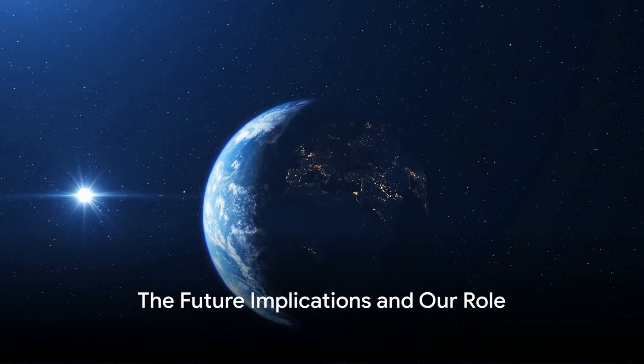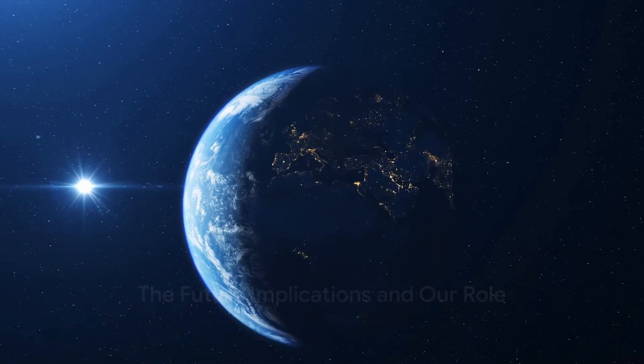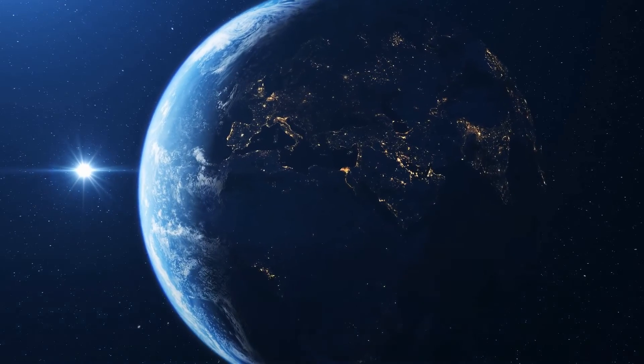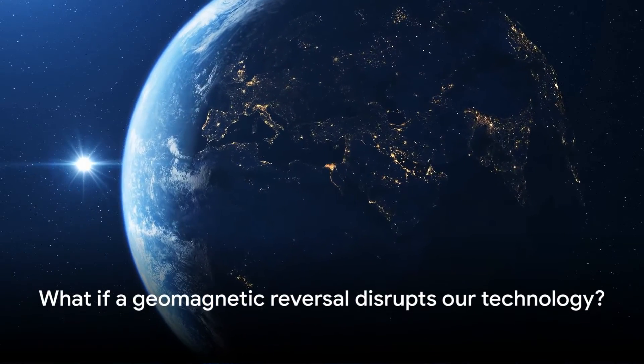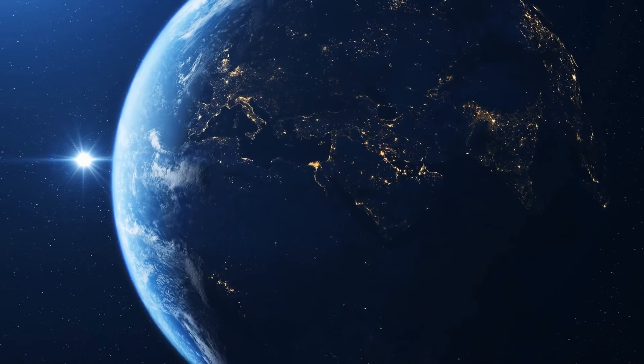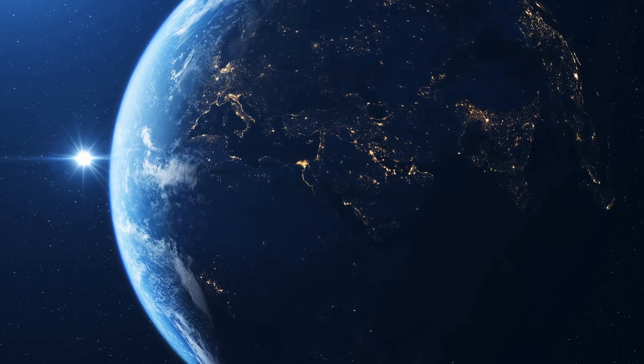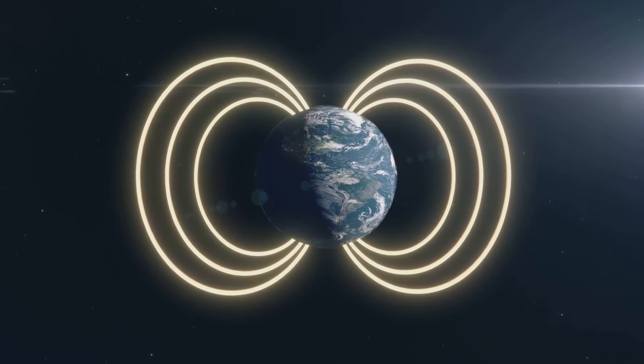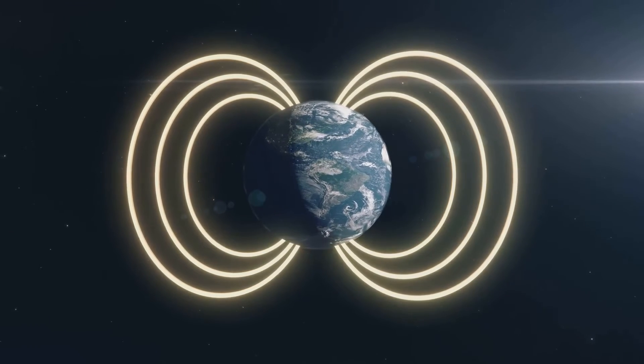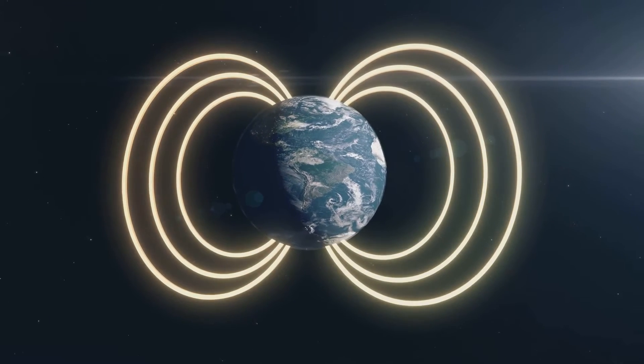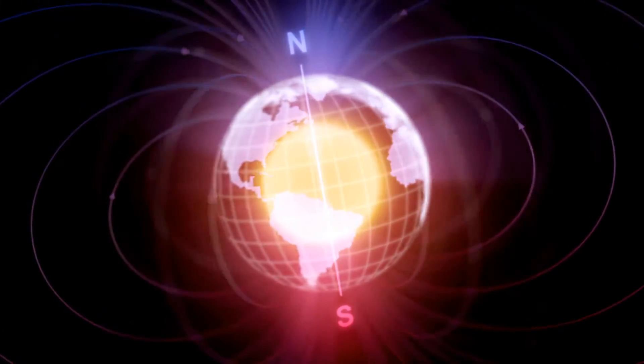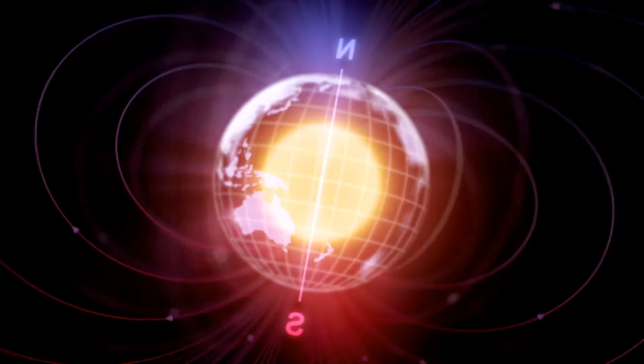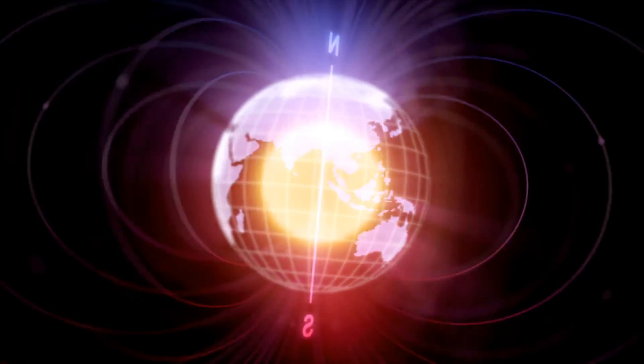The Earth's magnetic field is on the move again, and some scientists believe another reversal could be on the horizon. Now, let's delve into the implications of a future geomagnetic reversal for our modern society. Picture this: our reliance on technology has grown exponentially in recent years. From cell phones to satellites, our world is interwoven with intricate networks of electronic devices. But what if I told you that a geomagnetic reversal could disrupt these networks?